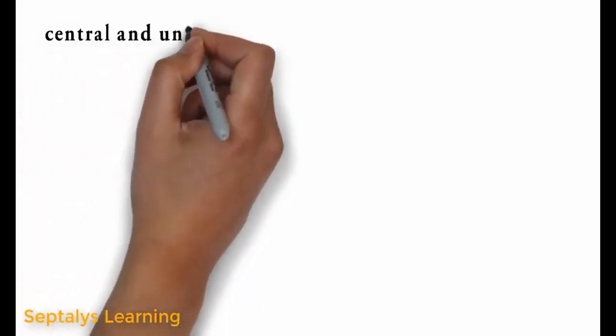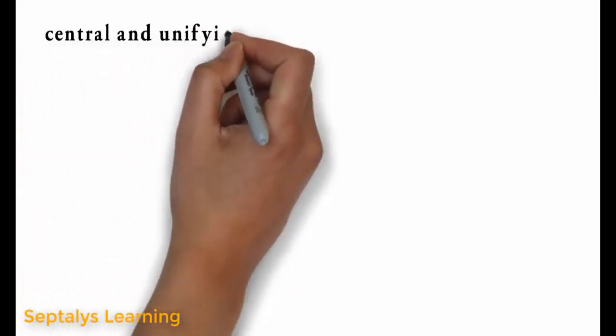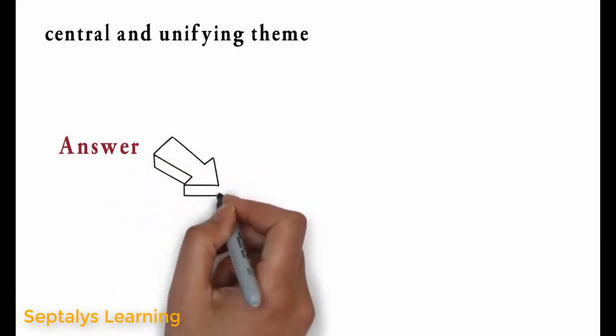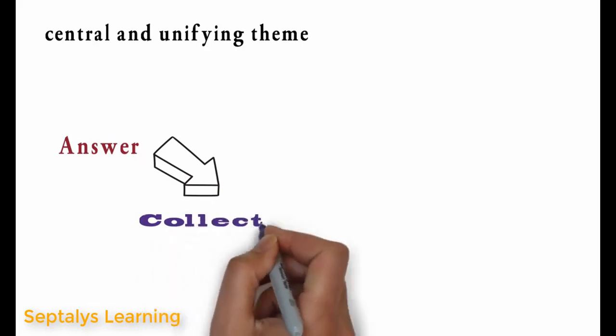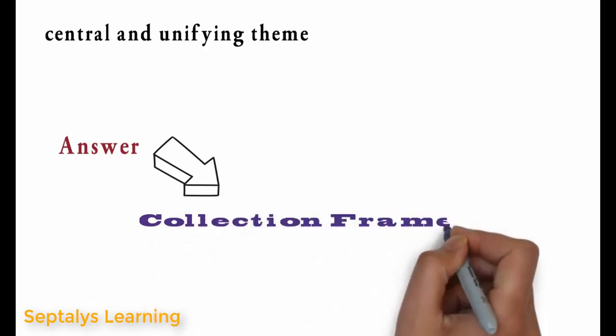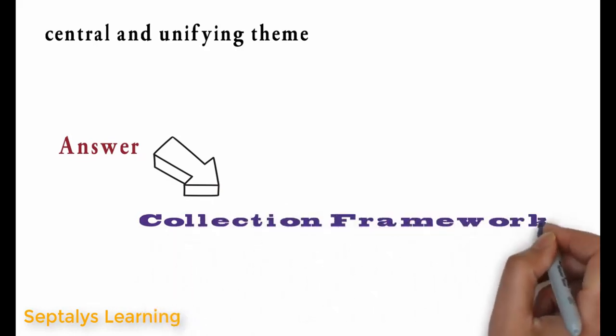Hence, we needed a central and unifying theme to handle groups of objects. And the collection framework is the answer to that. A collection framework provides a centralized and unified theme to store and manipulate groups of objects.